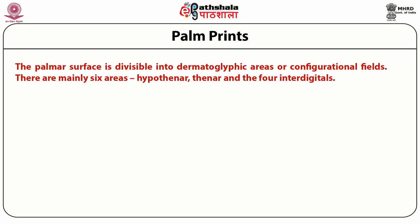Palm Prints. Palm prints are studied as follows. First, configuration areas: the palmar surface is divisible into dermatoglyphic areas or configuration fields. There are mainly six areas: first is hypothenar, then thenar, and four interdigital areas. Each of these areas is a topologic unit, its individuality being expressed both by the existence in some palms of discrete patterns and by the characteristic presence of parietal boundaries formed by triradii and their radians.